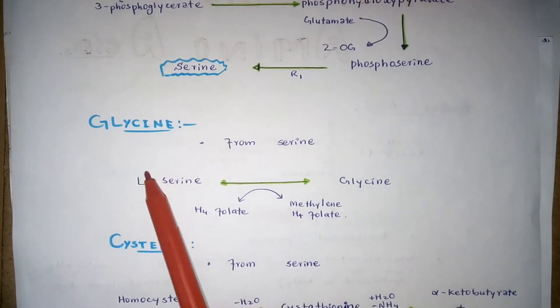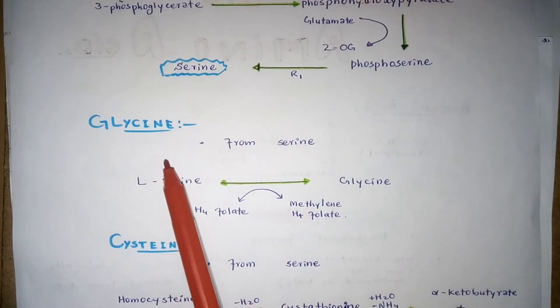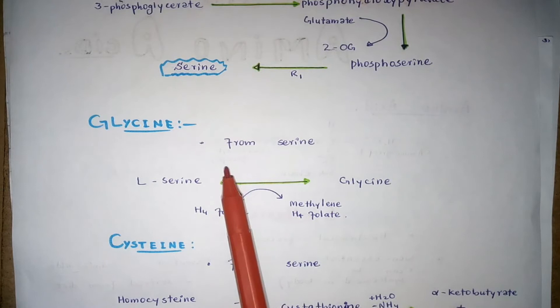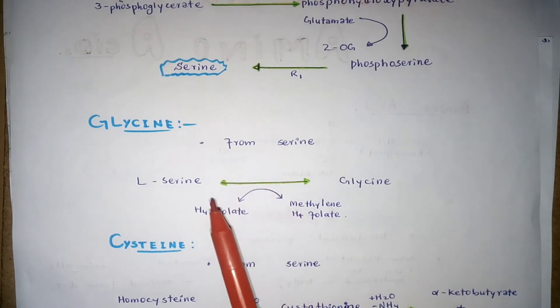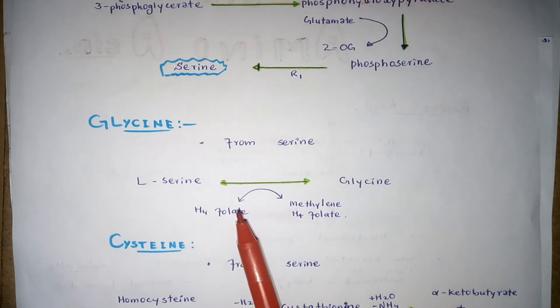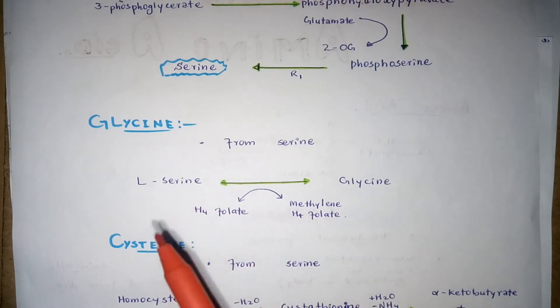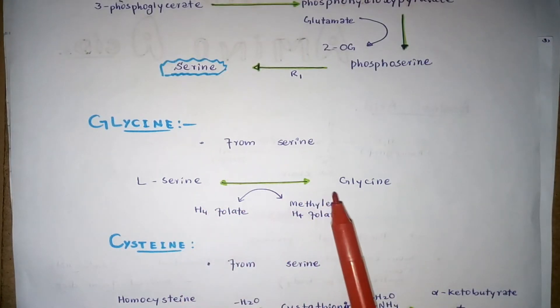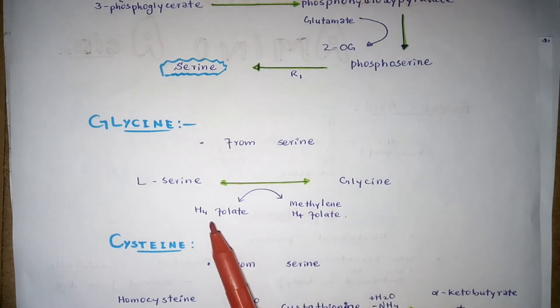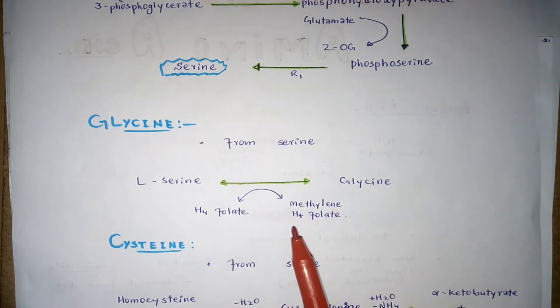Formation of glycine: glycine and cysteine can be derived from serine. Glycine can be produced from serine by a reaction in which a methyl group is transferred to tetrahydrofolate and glycine is produced. Here is the reaction by which L-serine is converted into glycine, with the methyl group transferred to tetrahydrofolate.